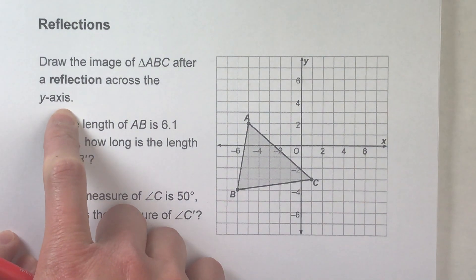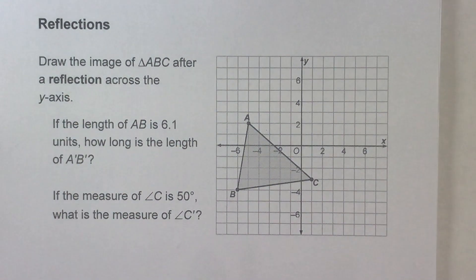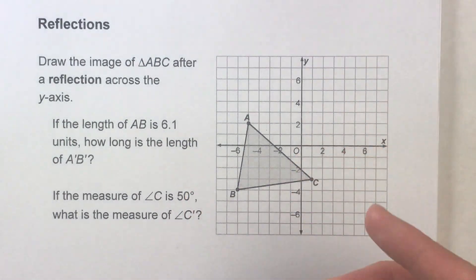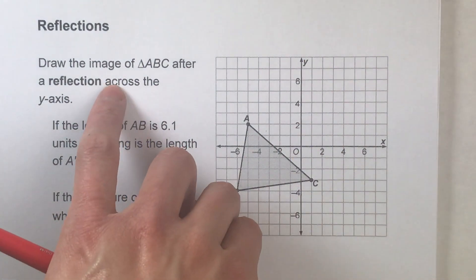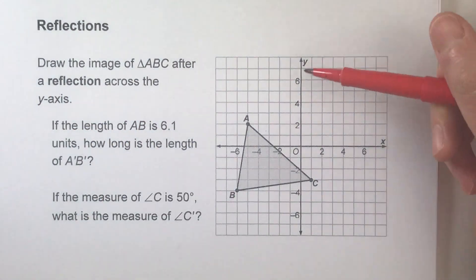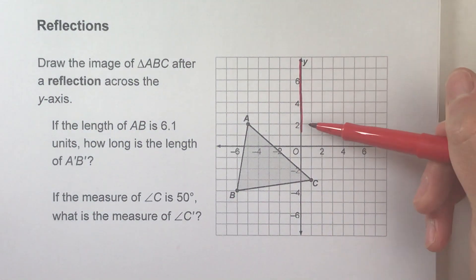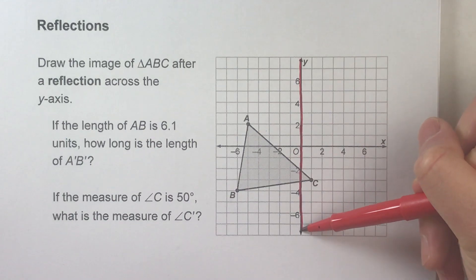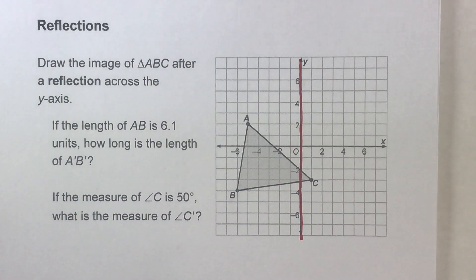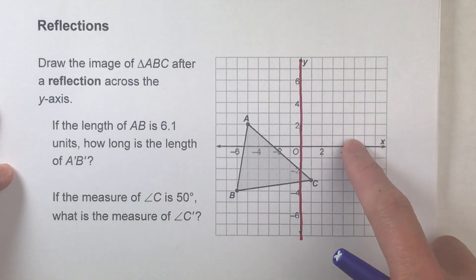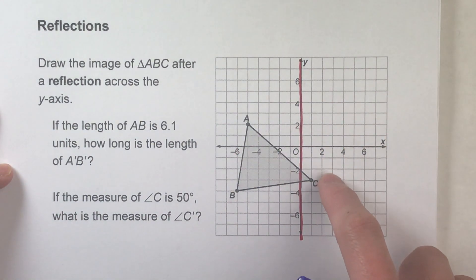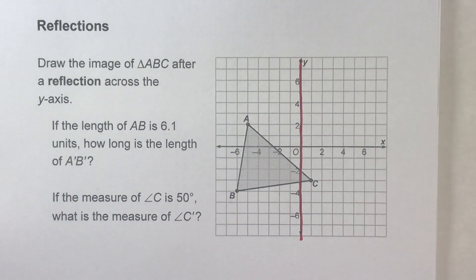For example, draw the image of triangle ABC, that's this triangle here, after a reflection across the y-axis. Whenever we are doing a reflection, the first thing we really need to know is where is the mirror? In other words, which line are we reflecting across? In this case, it's the y-axis. So let's do this.